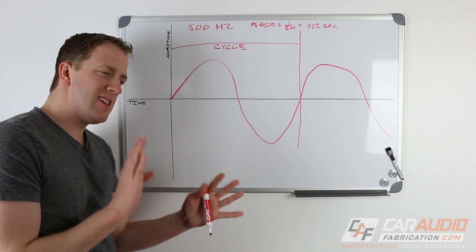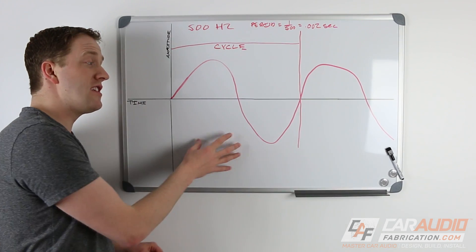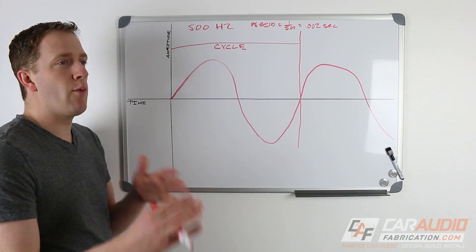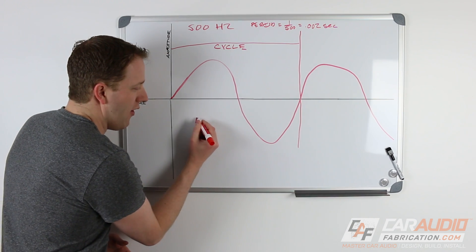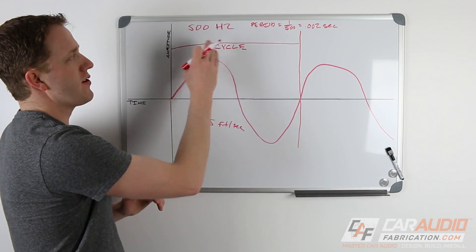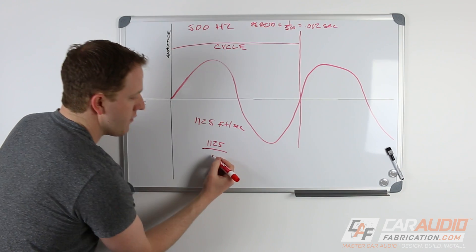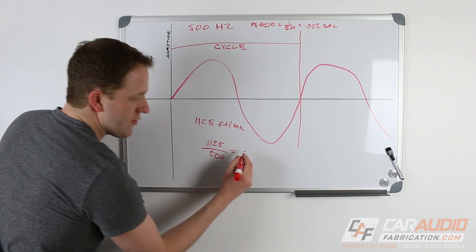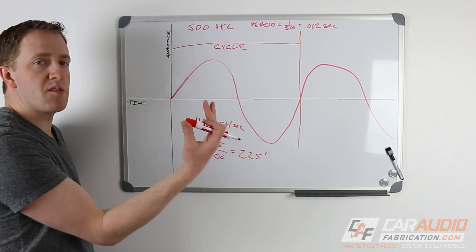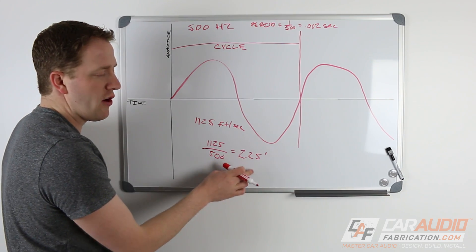Now let's talk about wavelength. So wavelength is the actual distance it takes for a sound wave to complete a full cycle. Now, in order to determine the wavelength, we need to know the speed of sound. Now the speed of sound actually varies based on where you are in the world, but a good average is about 1125 feet per second. So in order to determine how long this 500 hertz sound wave is, we need to divide 1125 by the frequency. So 1125 divided by 500 is about 2.25 feet. So in other words, when you're playing that 500 hertz sine wave, it's going to complete a cycle in a distance of two and a quarter feet.